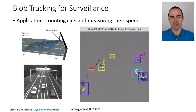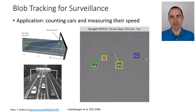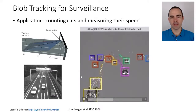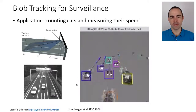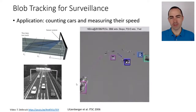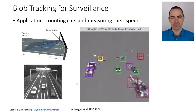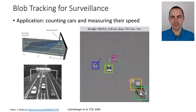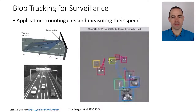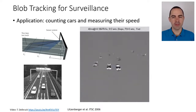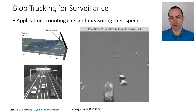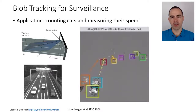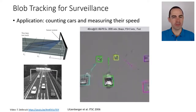Maybe we can assign two or more bounding boxes to one of the cars. This is a very efficient tracker and has applications in surveillance — for example, you would like this tracker to count the cars and maybe measure their speed.